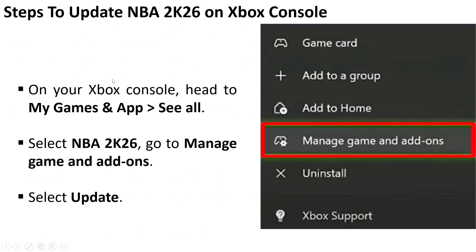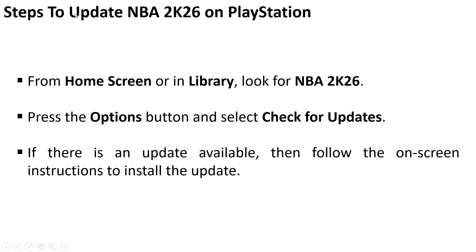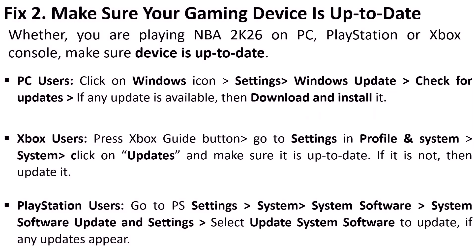To update NBA 2K26 on Xbox, go to My Games and Apps, select See All, select NBA 2K26, go to Manage Game and Add-ons, and select Update. On PlayStation, from the home screen or library, look for NBA 2K26, press the Options button, select Check for Updates, and follow the on-screen instructions to install the update. Then launch the game and check if the error is fixed.